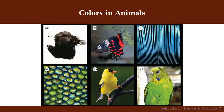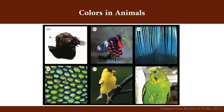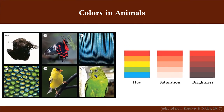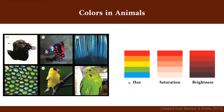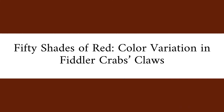The production of these colors is often related to an animal's condition, and when these colors are used as signals, variation in their attributes can affect the quality of the signal, and thus the receiver's response to it. But why am I focusing so much on signals when the title stated that I was going to talk about fiddler crabs?